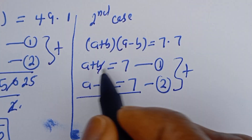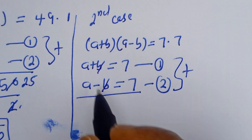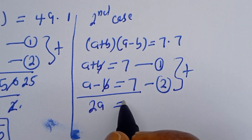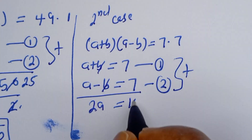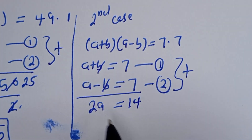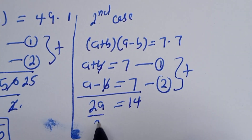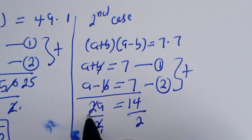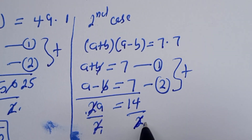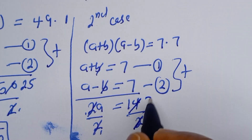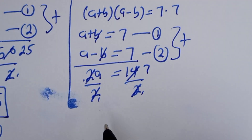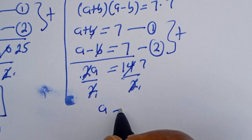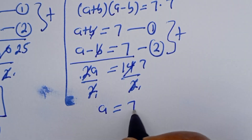The B terms cancel. We have A plus A, so 2A is equal to 7 plus 7, which is 14. Now let's divide both sides by 2, giving us A is equal to 7.